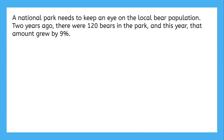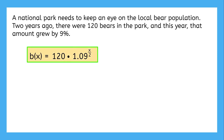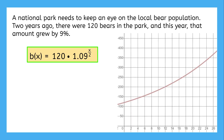Do you think you could write an exponential function on your own? Pause the video and try this example. In the beginning of this scenario, there were 120 bears in the park, and that amount grew by 9%. The whole previous amount plus nine hundredths of it gives a growth factor of 1.09. But that growth wasn't over a year — it was over two years. The function representing the bear population in this park is 120 times 1.09 to the x/2 power. And here's what that graph looks like.